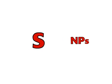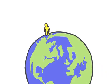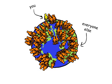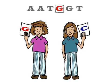There are around 10 million SNPs in the human genome, which account for many of the genetic differences between you and everyone else on the planet. Some SNPs account for differences in appearance. Others can affect how we develop diseases or respond to drugs.